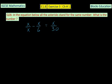In question number 28 it says: in the equation below all the asterisks stand for the same number, what is the number? So in fact we're looking for the asterisk. I just replace it with X, so X over X will cancel out, will be 1 minus X over 6 equals X over 30.